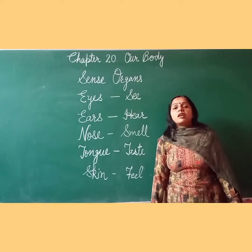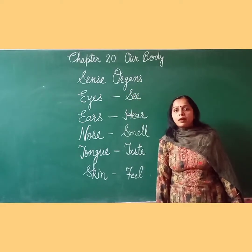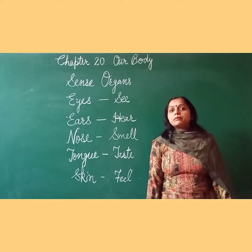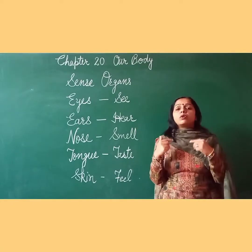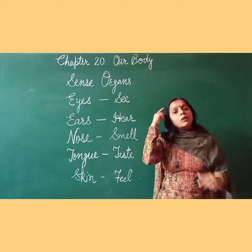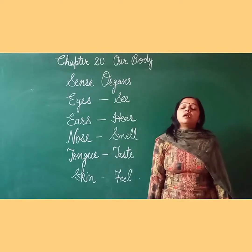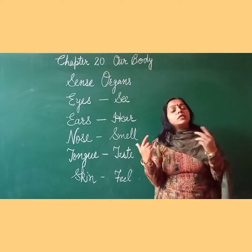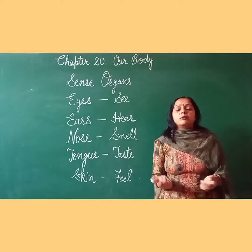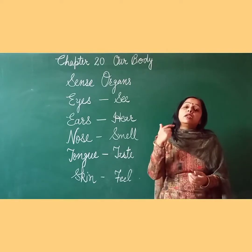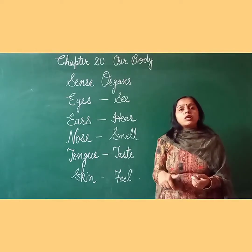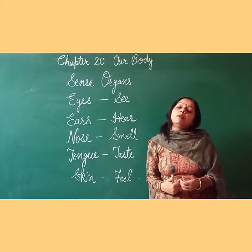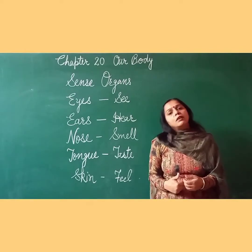You have also learned about sense organs in class 2. Now, how do the sense organs work? Sense organs send messages to our brain with the help of nerves. The brain then sends messages through nerves to body organs so they work properly.